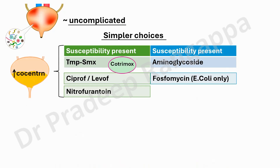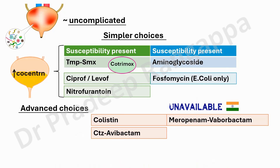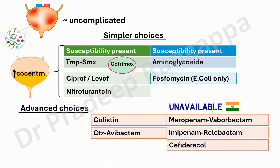The advanced choices, which our intensive care colleagues are very familiar with, include colistin — you're all familiar with the dosage. Ceftazidime-avibactam is still a good choice for CRE and is suggested by IDSA as an advanced option. Drugs that are recommended but currently unavailable in India — and may be coming soon — include meropenem-vaborbactam and imipenem-relebactam. We are all eagerly waiting for cefiderocol, which is positioned similarly to ceftazidime-avibactam and is also recommended by IDSA.